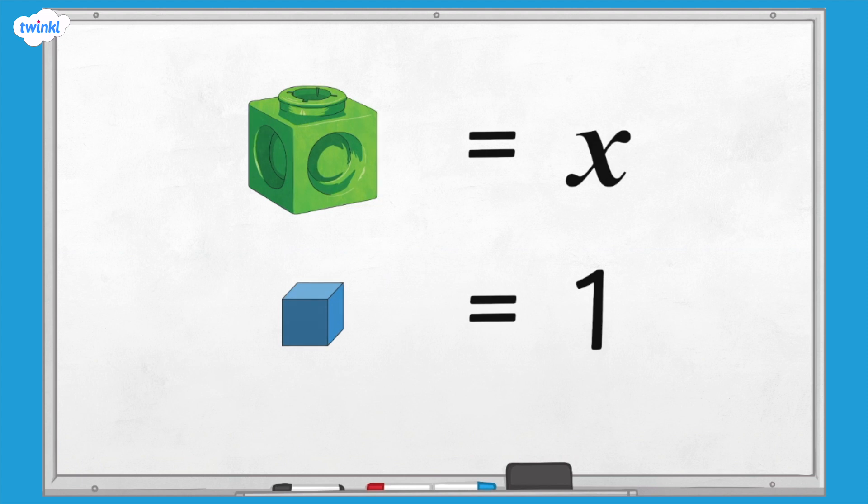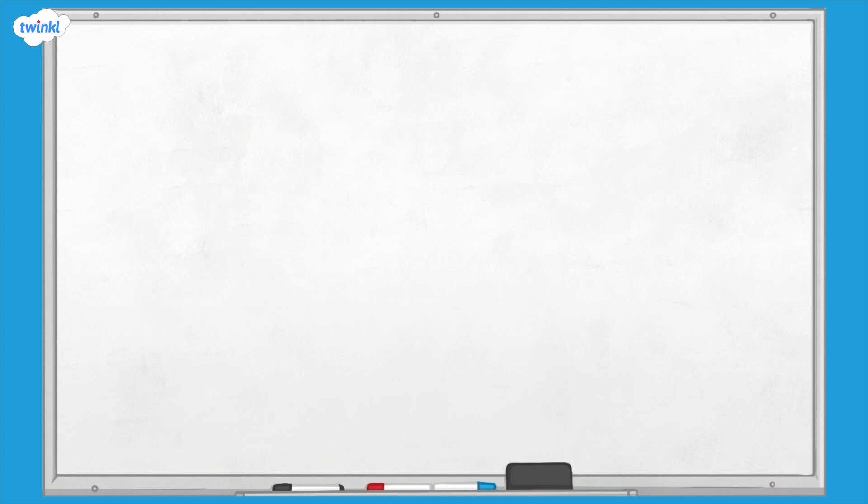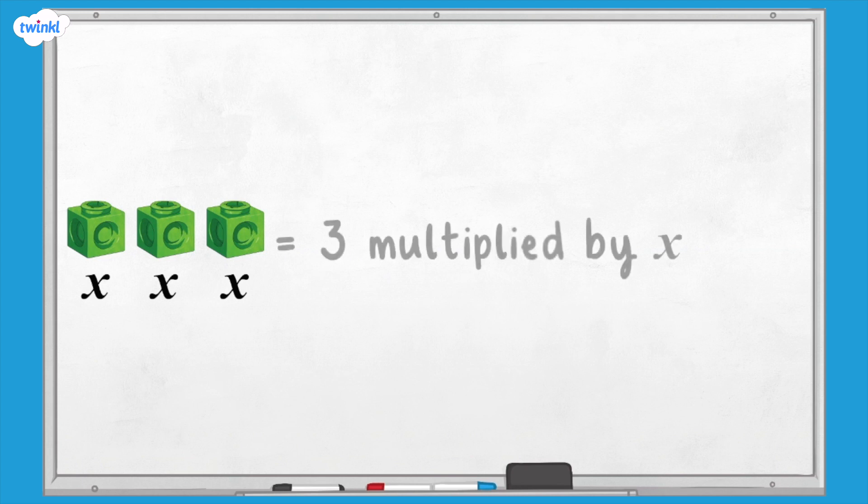Let's start with writing the expression that is represented by three interlocking cubes. We could say that this expression is x add x add x or three lots of x. Mathematically we would say three multiplied by x. In algebra we would write this as 3x.